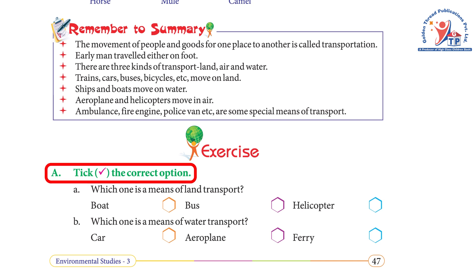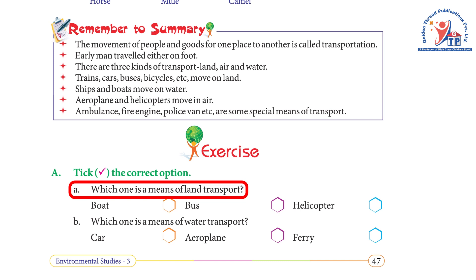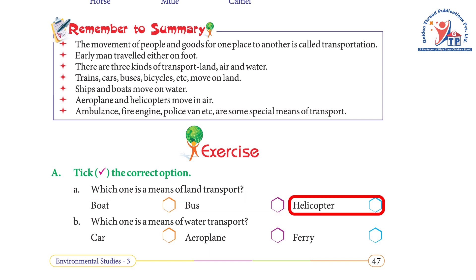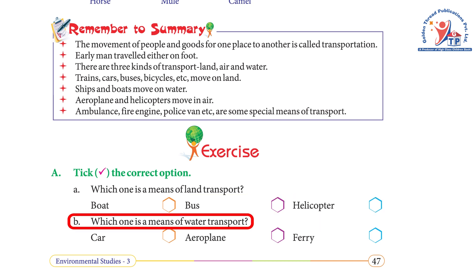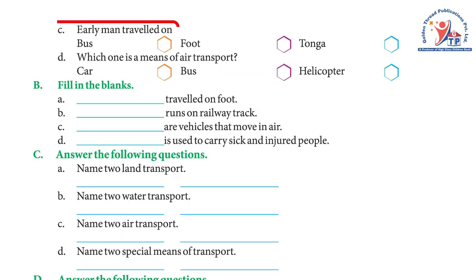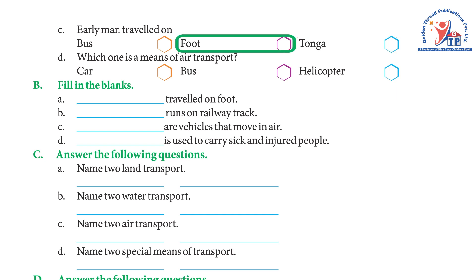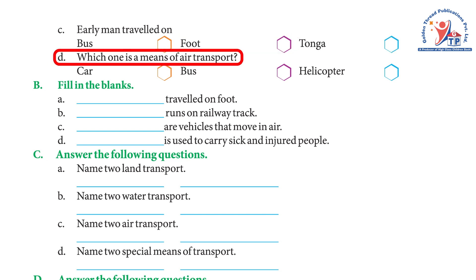Exercise A — Choose the correct option: (a) Which is a means of land transport? Boat, Bus, Helicopter — Answer: Bus. (b) Which is a means of water transport? Car, Aeroplane, Ferry — Answer: Ferry. (c) Early men traveled on — Bus, Foot, Tonga — Answer: Foot. (d) Which is a means of air transport? Car, Bus, Helicopter — Answer: Helicopter.